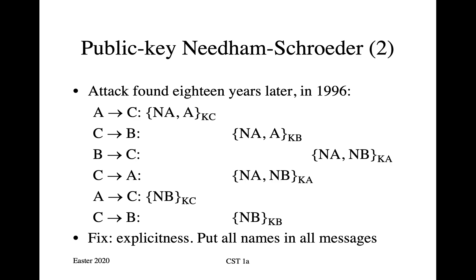Here's the problem. Charlie says to Alice, 'Hi, I'd like to speak to you.' So Alice sends to Charlie: N-A and Alice's name encrypted under Charlie's public key. Charlie can decrypt this because he knows Charlie's private key. So he takes N-A and A and encrypts them under Bob's public key K-B, and sends them on to Bob, pretending to be Alice. Bob decrypts N-A and A, finds Alice's name, and so he believes — mistakenly as it turns out — that they came from Alice.